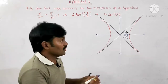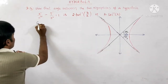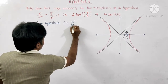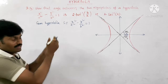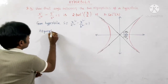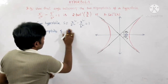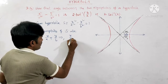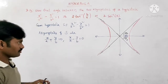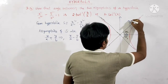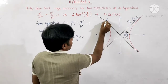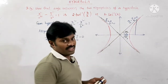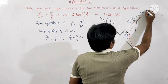The given hyperbola is x²/a² − y²/b² = 1. The asymptotes of this hyperbola are: x/a + y/b = 0 and x/a − y/b = 0. Taking x/a − y/b = 0 and cross-multiplying, we get bx − ay = 0.